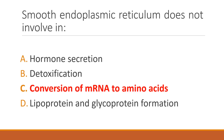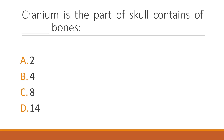Which part of the skull contains how many bones? The skull has a total of 14 bones — divided into the cranium, which is the brain box, and the facial bones.